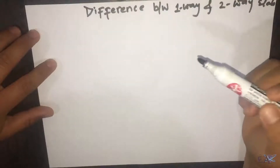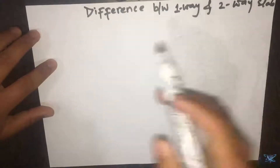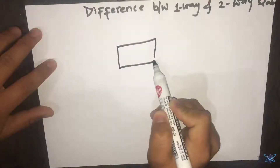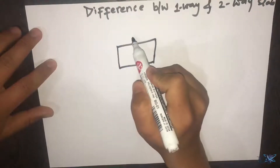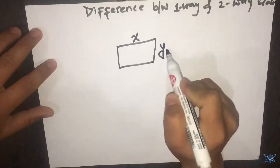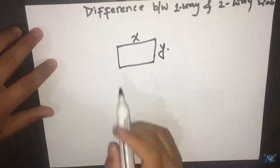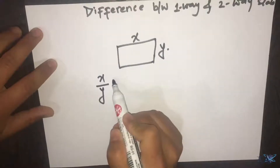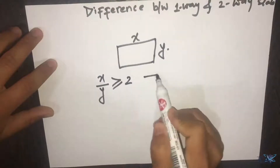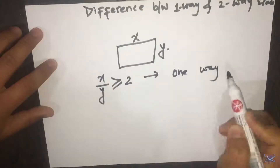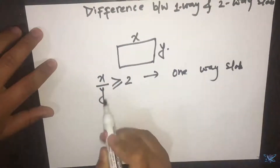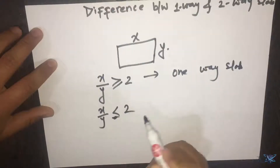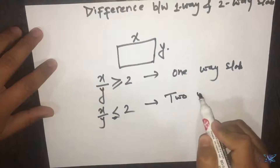What are the differences between one-way and the two-way slab? Let us assume a slab where the long span is X and the short span is Y. If the ratio X by Y is greater than or equal to 2, then we call it a one-way slab. If this ratio X by Y is less than 2, then we call it a two-way slab.